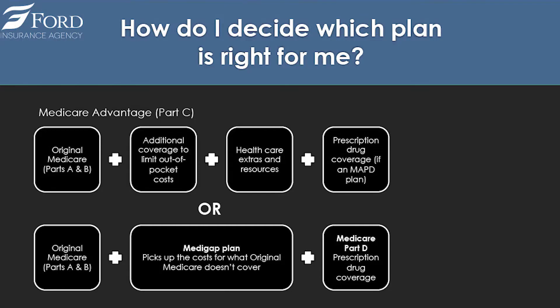How do you decide what is right for you? With a Medicare Advantage Part C plan, you must first have Original Parts A and B, then we layer on additional coverage to limit out-of-pocket expenses, healthcare extras, and prescription drugs. Or you could keep just Original Medicare Parts A and B and add a Medigap plan, which limits your costs and picks up all those extra 20% on the medical side, plus a separate prescription drug card through Medicare.gov.